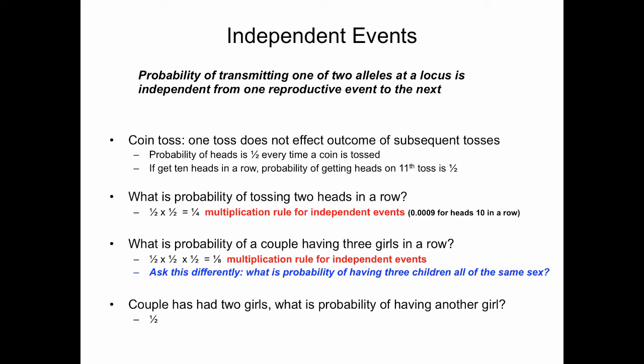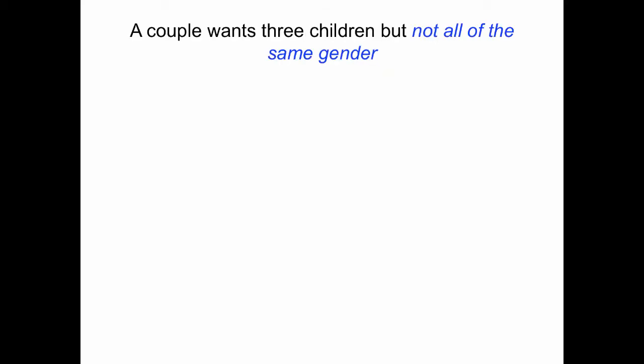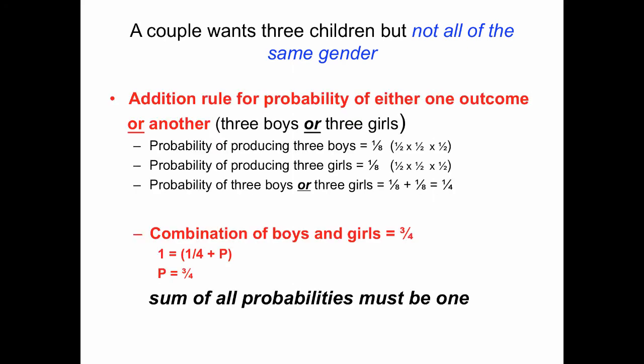If a couple already has two girls, what's the probability of having another girl? That's a half, because it's an independent event. Suppose a couple wants three children but not all of the same gender — then you apply the addition rule for probability of either one outcome or another. The probability of three boys is one-eighth, and the probability of three girls is also one-eighth, so the probability of three boys or three girls is one-fourth. The combination of having mixed boys and girls is three-fourths, because all probabilities must add up to one.